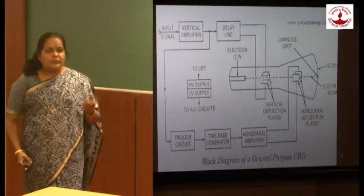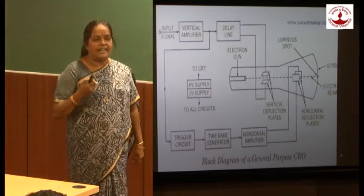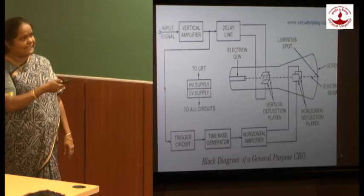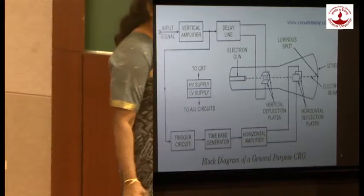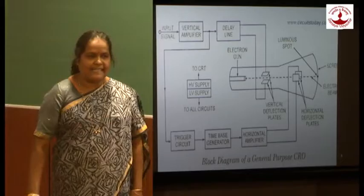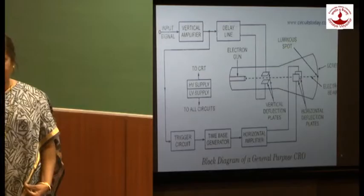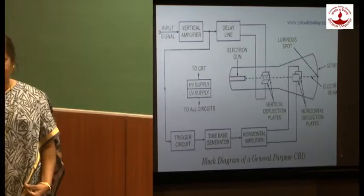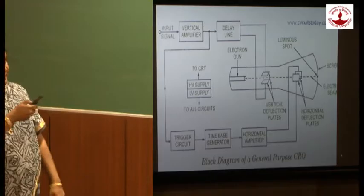This electron beam strikes on the fluorescent screen. Why is it called an electron gun? It produces an electron beam that has high velocity — exactly like a bullet fired from a gun. This beam travels in a straight line direction and strikes on the fluorescent screen, which is coated with phosphor material inside. When this high velocity electron beam strikes on the fluorescent screen, the phosphor material absorbs all the kinetic energy of the electrons and re-emits it in the form of visible spectrum — that is why we can see a bright spot or waveform on the CRO screen.